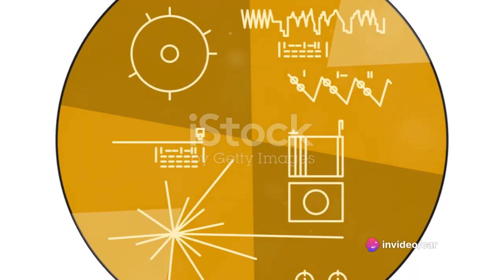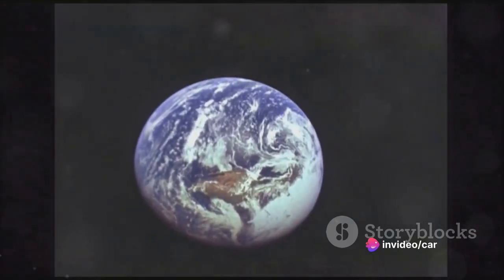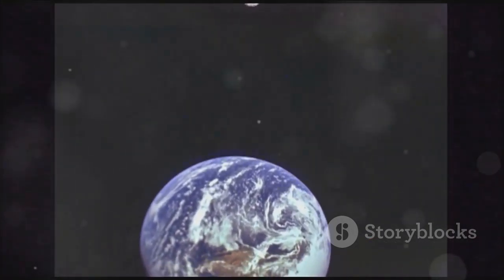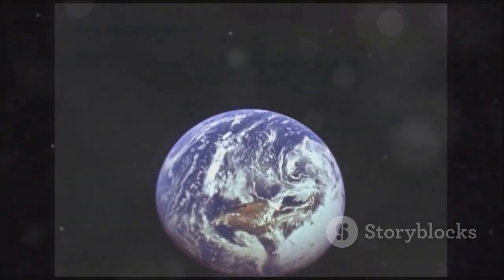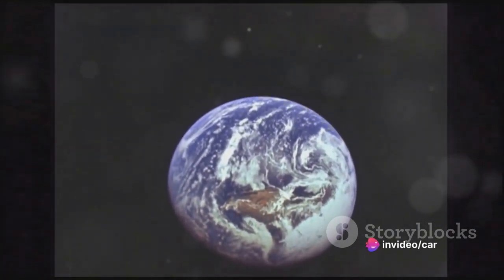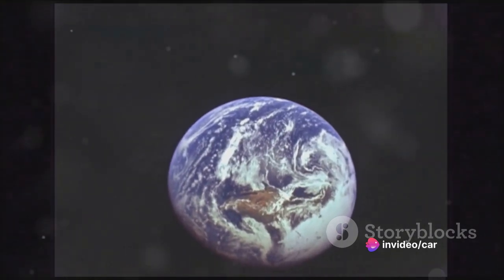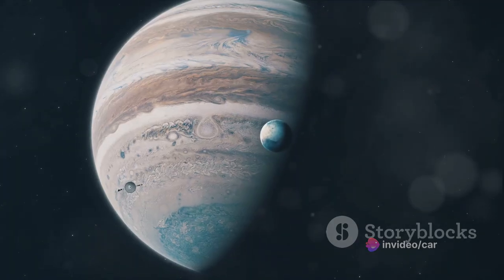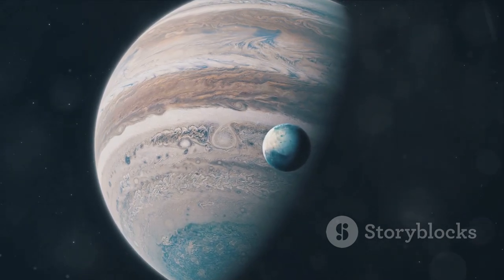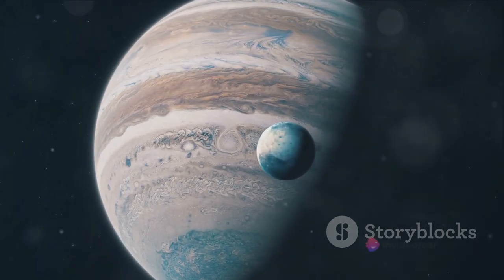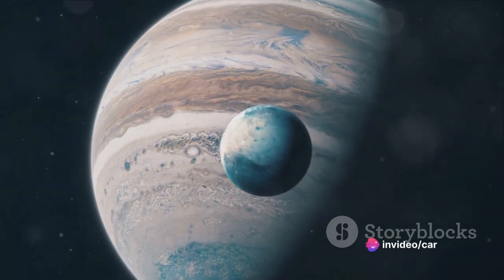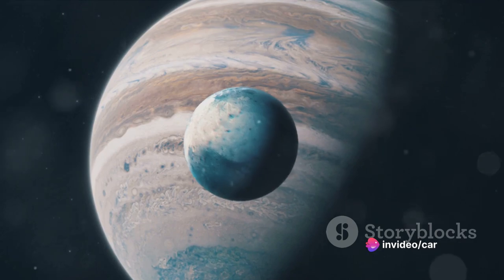One of the most remarkable aspects of the Voyager missions is the golden record on Voyager 1. This 12-inch gold-plated copper disk carries sounds and images selected to portray the diversity of life and culture on Earth. It's like a time capsule, a message in a bottle thrown into the cosmic ocean, carrying greetings in multiple languages, sounds of nature, music from different cultures and eras, and more. It's a testament to our hope, curiosity, and the desire to reach out to the cosmos and possibly other life forms.